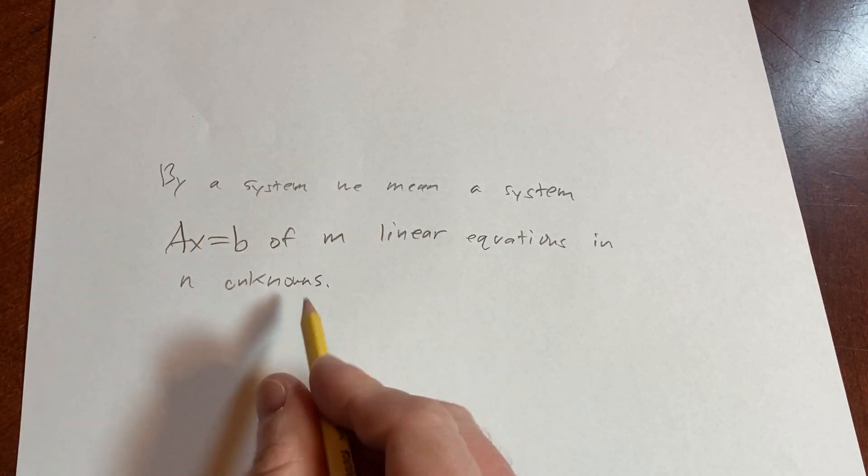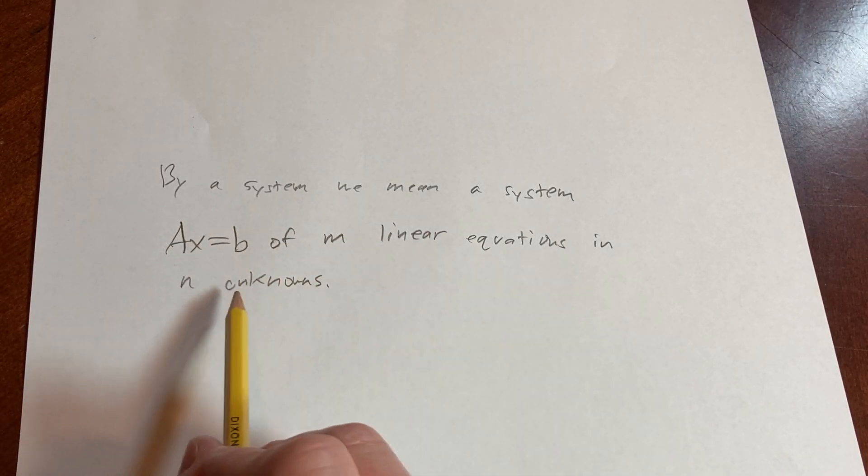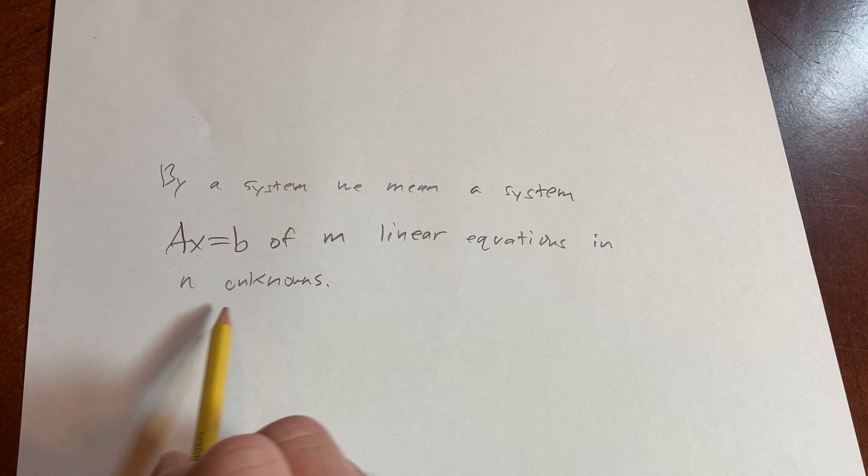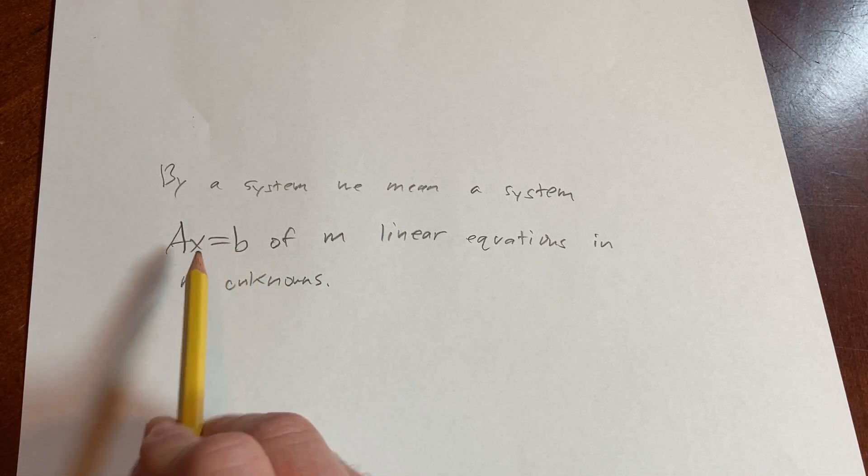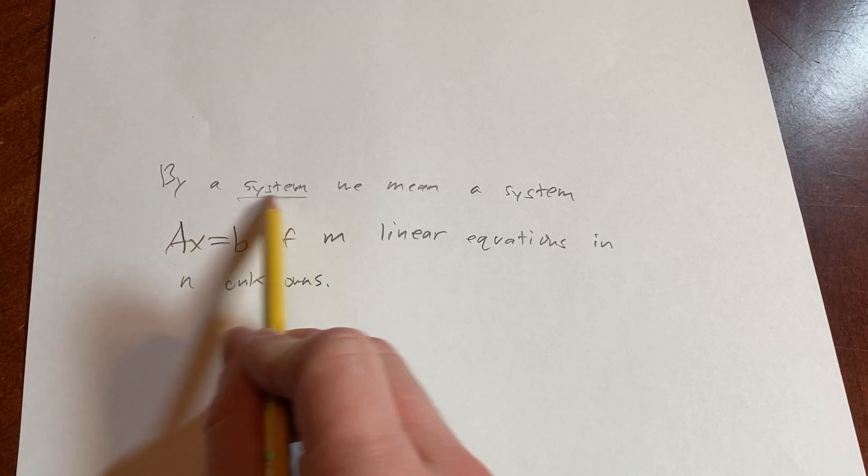So basically, this is a system of M linear equations in M unknowns, AX equals B, representing it by this equation. That's what we mean by a system.